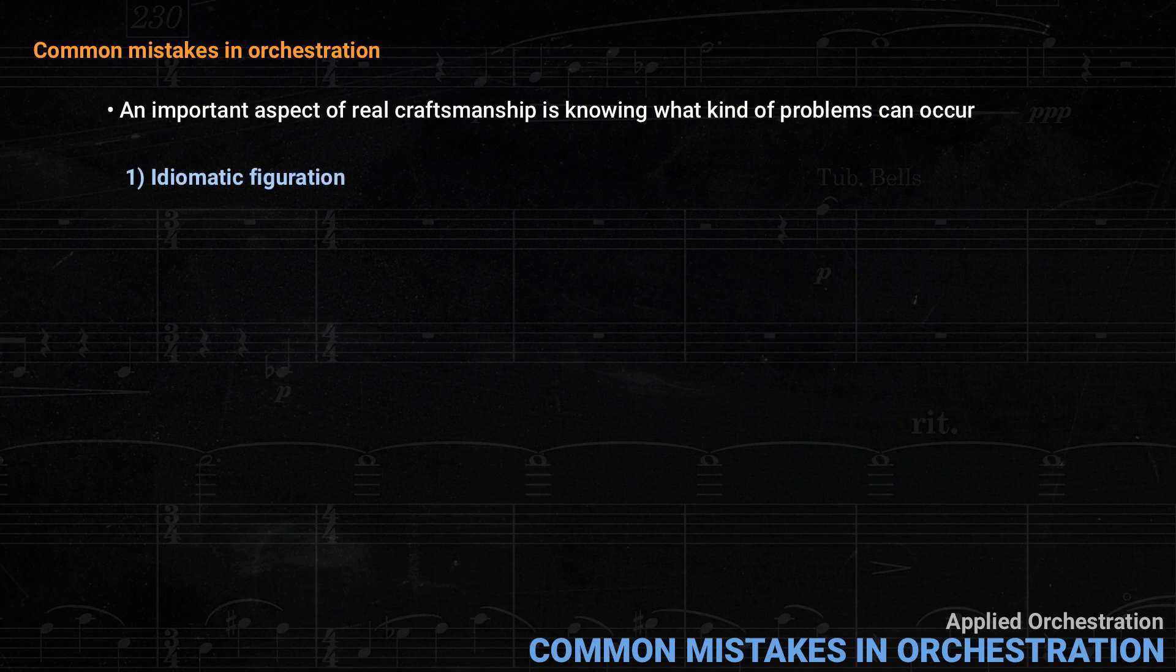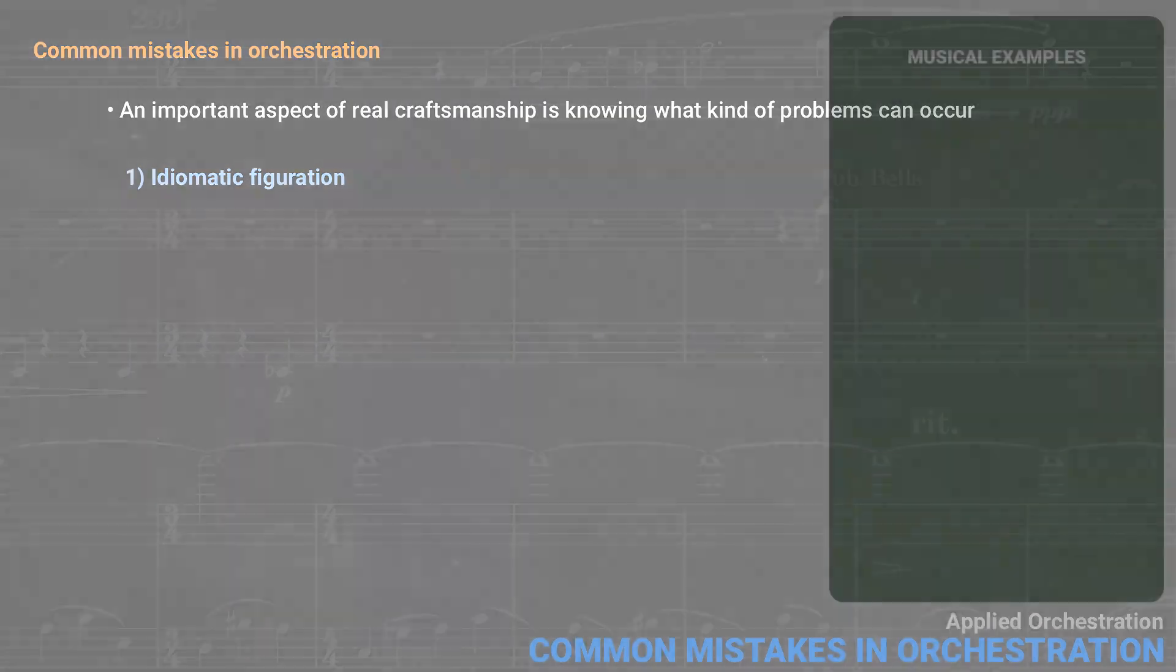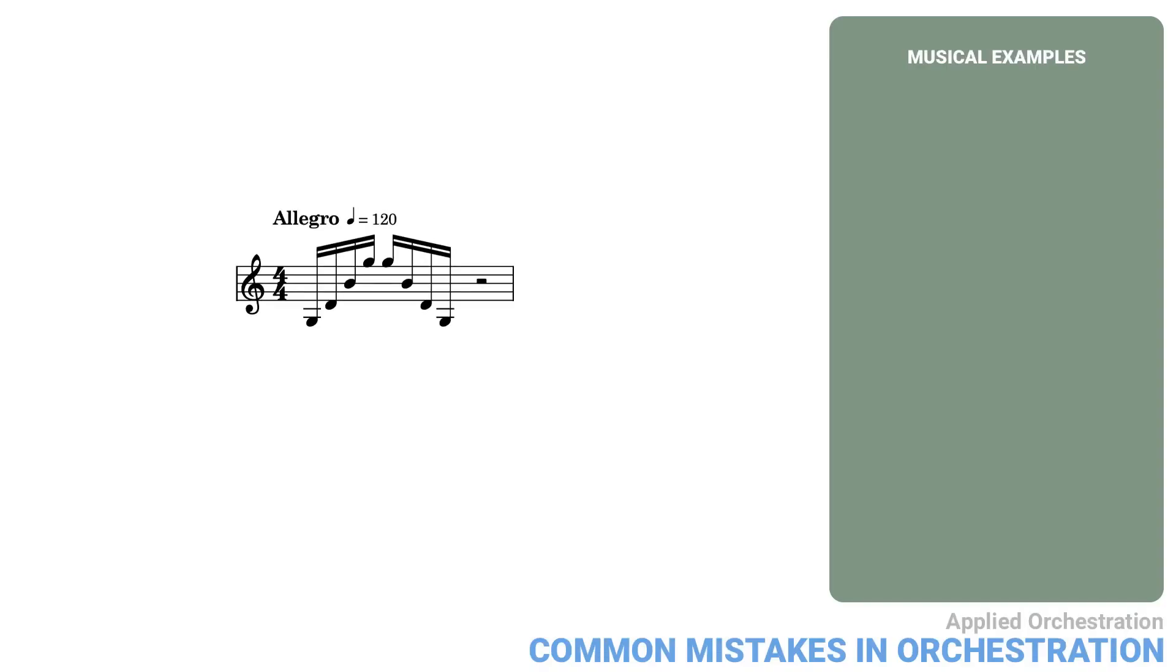A common problem for beginners is not knowing what's really idiomatic figuration for a given instrument. For example, take this little arpeggio figure for violin. On the violin, this is not particularly difficult since it contains two open strings and the other two notes are in the same position.